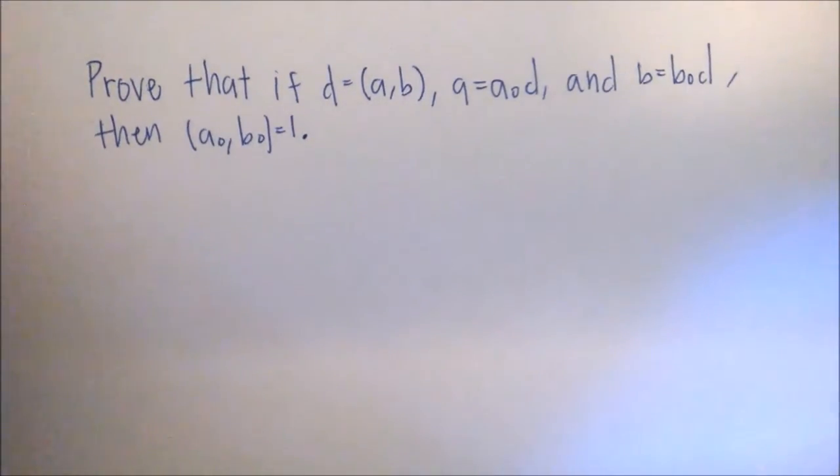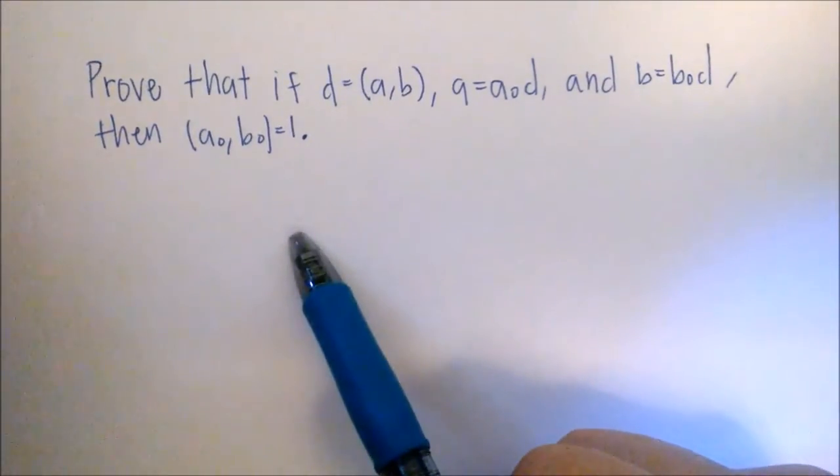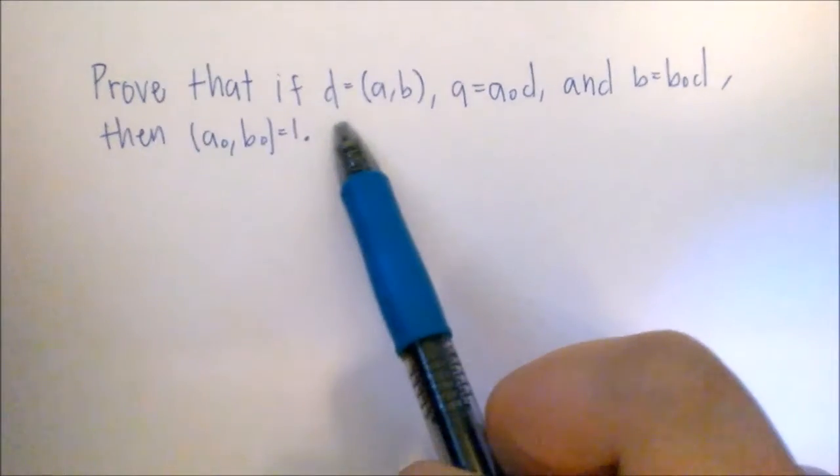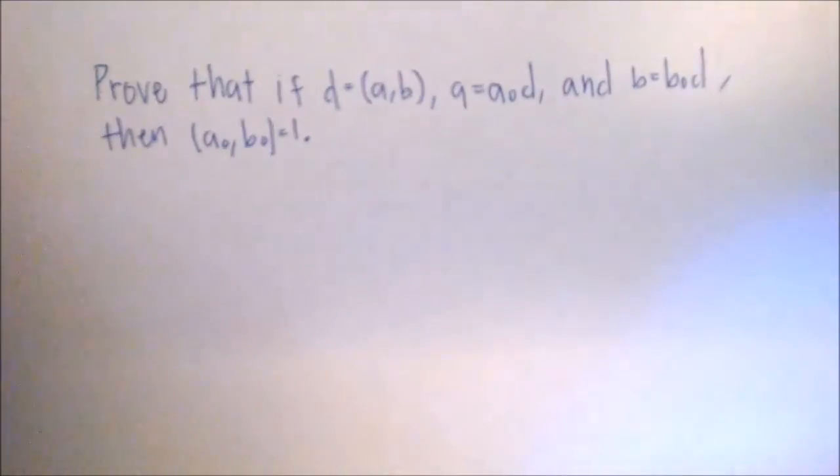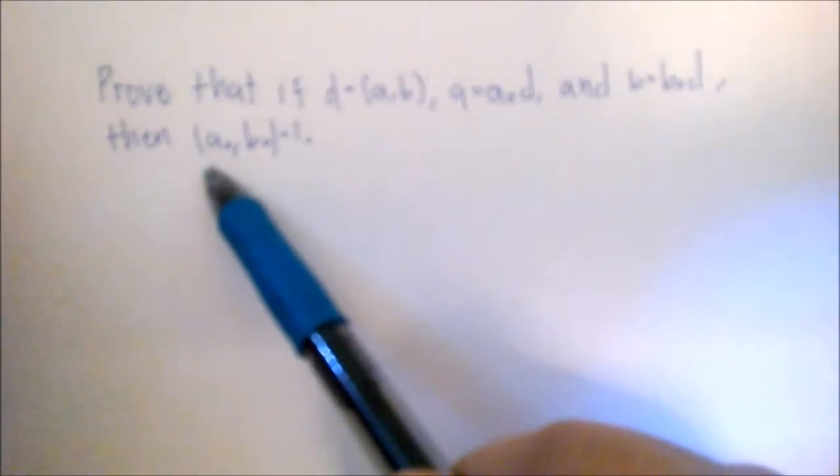So here's another example of a proof using the greatest common divisors and divisibility. Here if we want to prove that if the GCD of A and B is equal to D and A equals A0D and B equals B0D, then the GCD of A0 and B0 is equal to 1.